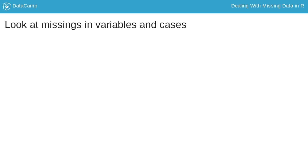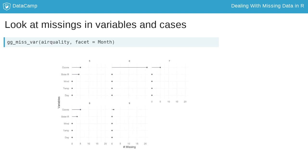gg-miss-var and gg-miss-case also allow for faceting by one variable. This means you can explore missingness in cases and variables across the levels of another group. This plot is faceted by month, showing the number of missings in each variable for each month. Here we see that ozone in month 6 has the most missings.